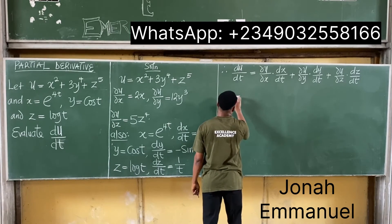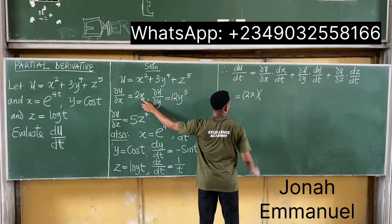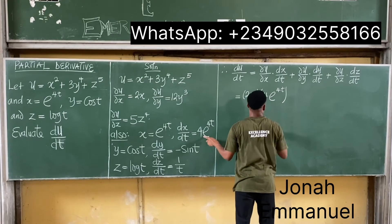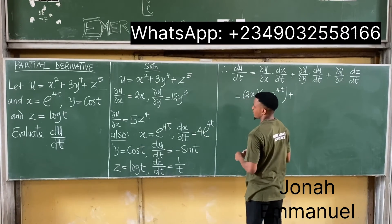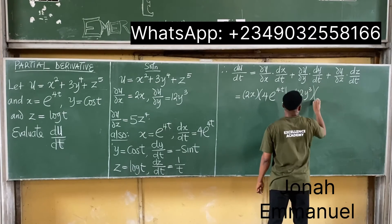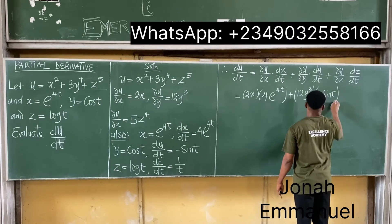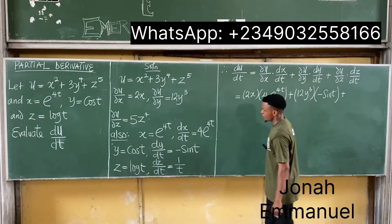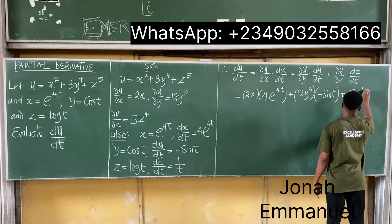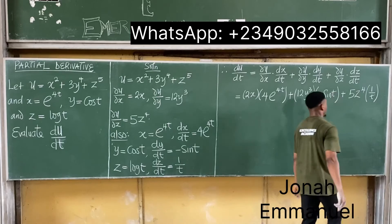Substituting the values: du/dt equals 2x times 4e^(4t), plus 12y³ times (minus sin t), plus 5z⁴ times 1/t. So we have: 2x · 4e^(4t) − 12y³ · sin(t) + 5z⁴/t.